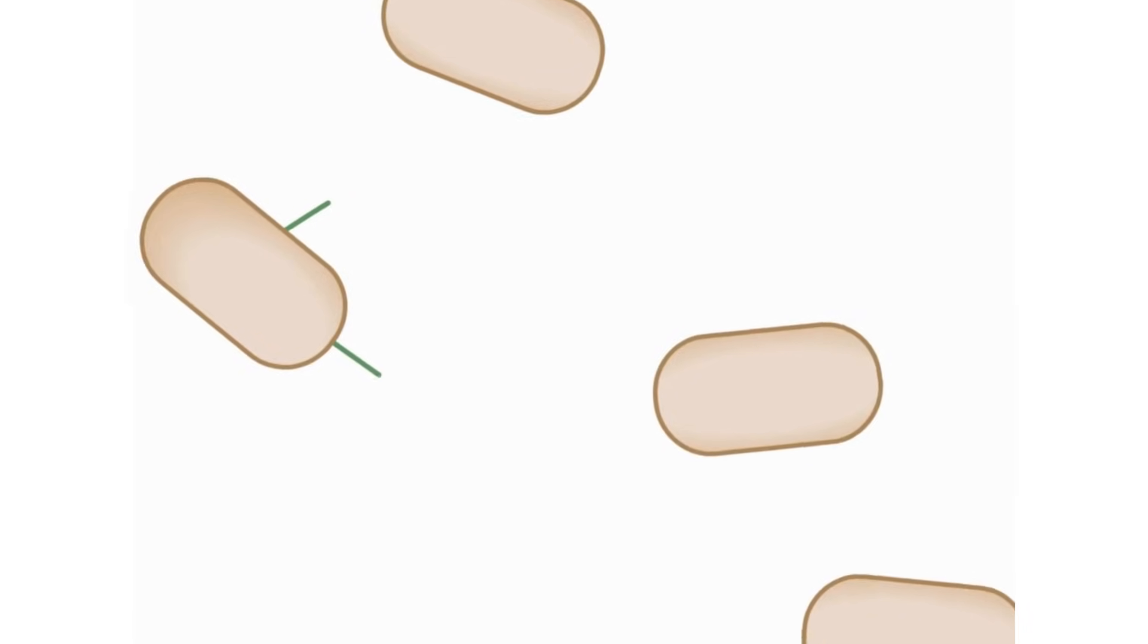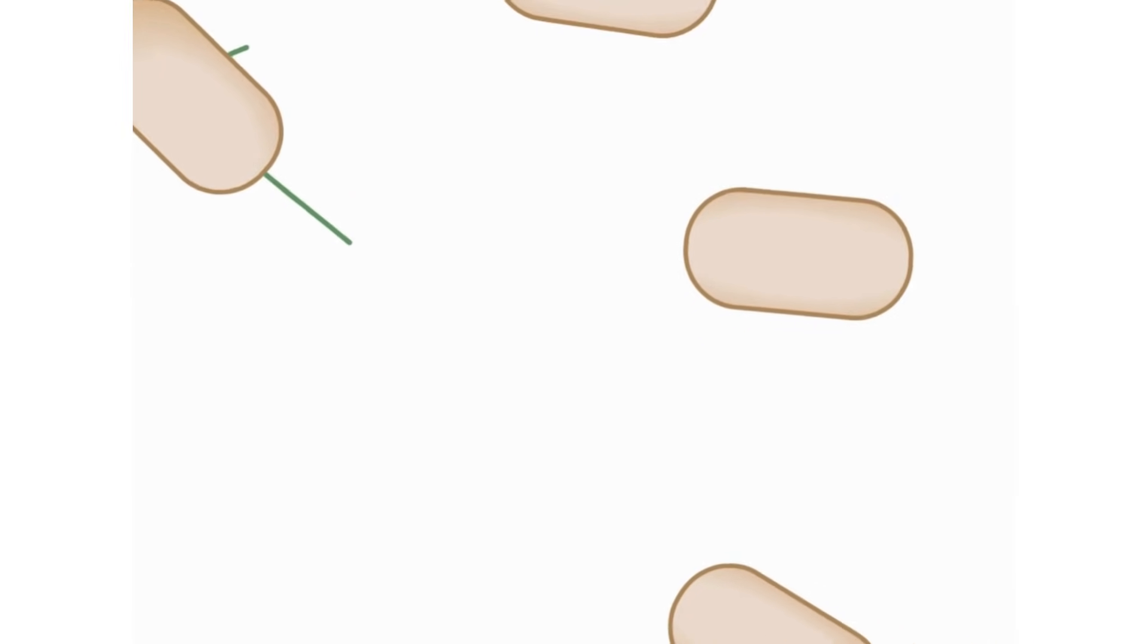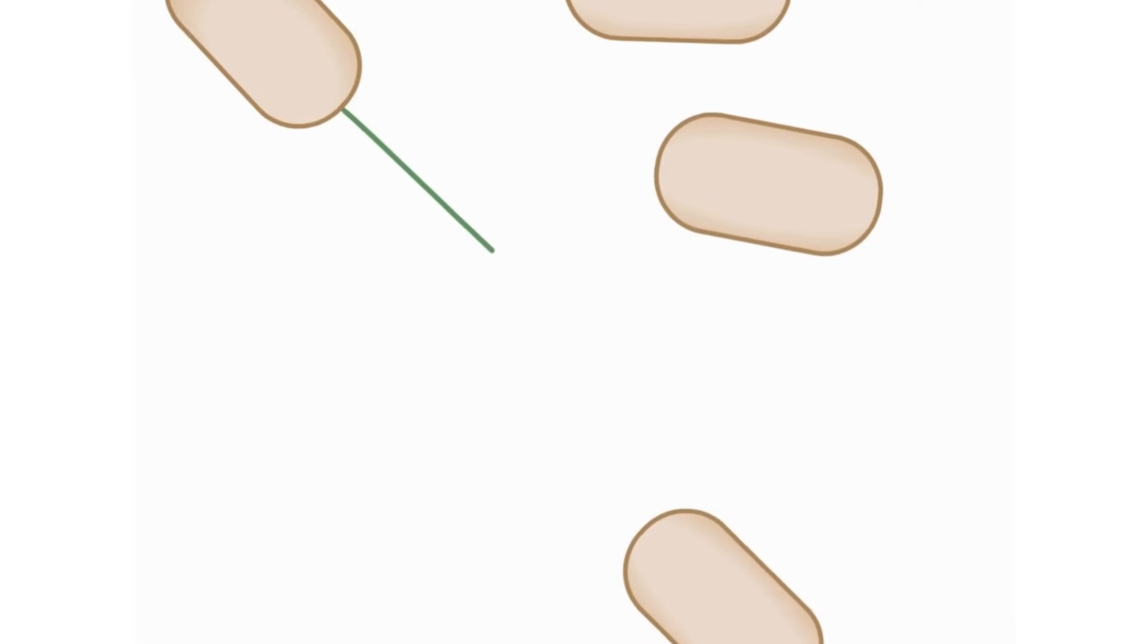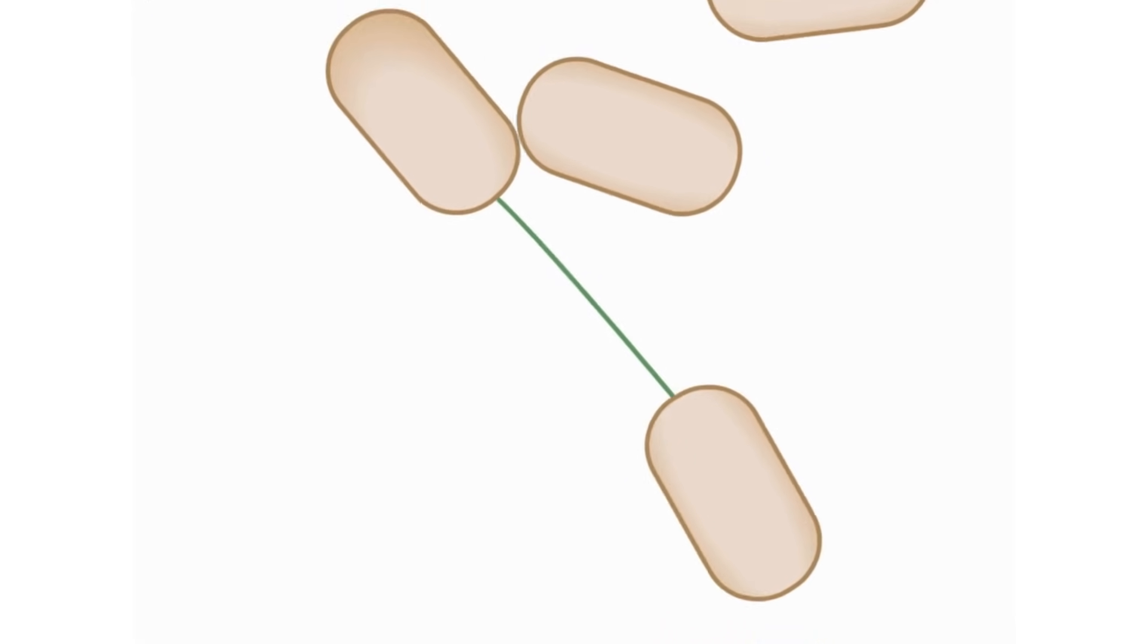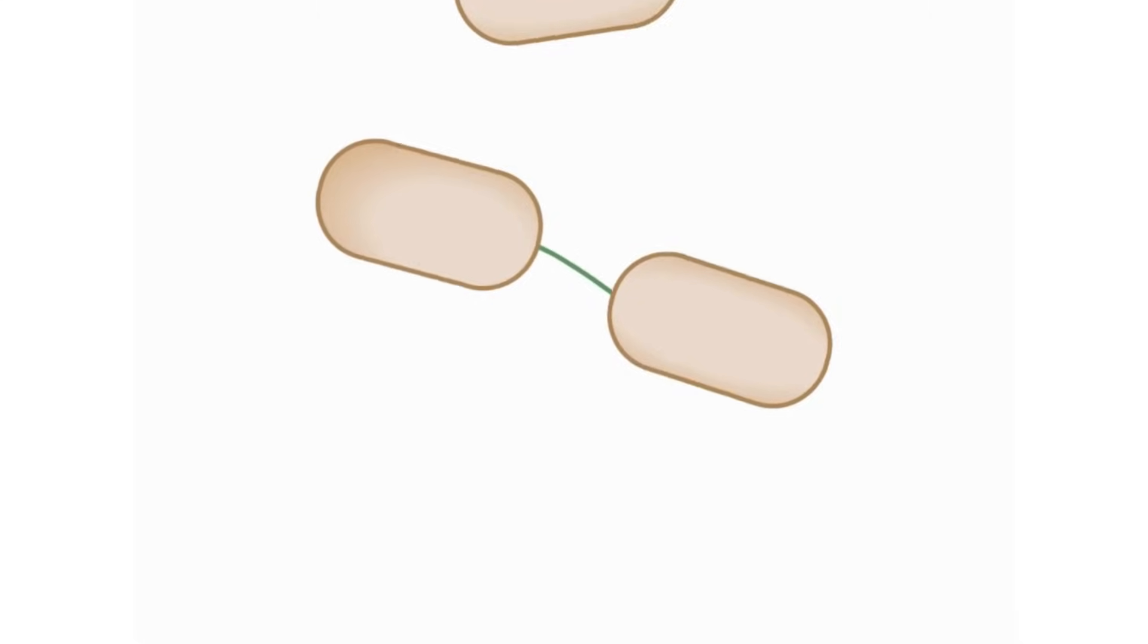Sex pili grow and shrink as they sample the environment around them. The tip of the sex pilus attaches to a receptor on the recipient cell and then the pilus retracts, drawing the two cells closer.